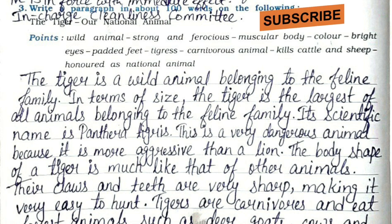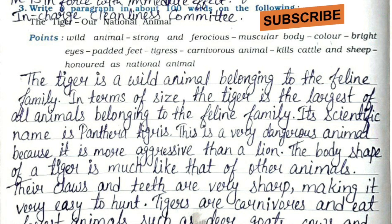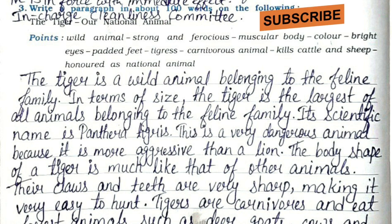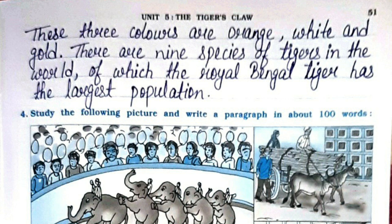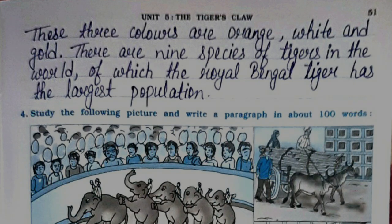Question 3: Write a paragraph in about 100 words on the tiger, our national animal. The tiger is a wild animal belonging to the feline family. In terms of size, the tiger is the largest of all feline animals. Its scientific name is Panthera tigris. It is more aggressive than a lion. The body shape of a tiger is much like that of other feline animals; their claws and teeth are very sharp, making it very easy to hunt. Tigers are carnivores and eat forest animals such as deer, goats, cows, and water buffaloes. Tigers are mostly tricolored with black stripes — orange, white, and gold. There are nine species of tiger in the world, of which the Royal Bengal Tiger has the largest population.